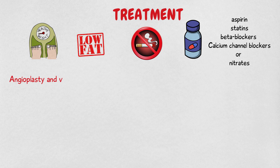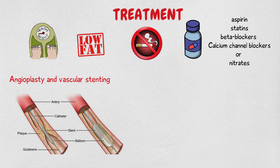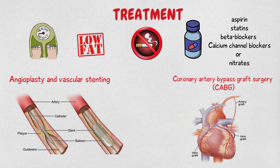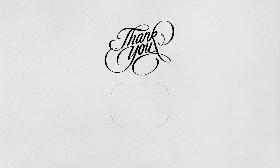Angioplasty and vascular stenting: following appropriate testing, your doctor may perform angioplasty and stenting, in which balloons or stents are used to open the blockage in coronary arteries and improve blood flow to the heart. Coronary artery bypass graft surgery (CABG) increases blood flow to the heart by using a vein or artery from elsewhere in the body, diverting blood flow around the area of narrowing or blockage in the coronary artery.